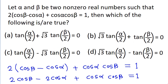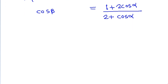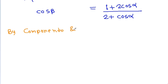And now, in every option, we have tan. So, for tan, we need sine and cos. Also, in every option, we have half angles alpha/2 and beta/2. So, for the half angle, we can get an idea of using componendo and dividendo.